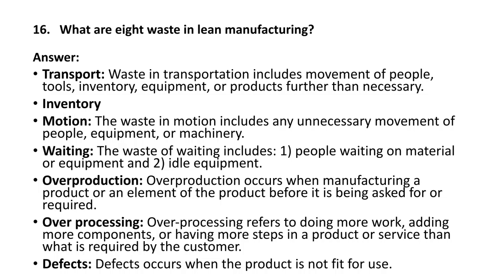The fifth waste is overproduction. Overproduction occurs when manufacturing a product or element before it is required. In push manufacturing, you are not considering demand and manufacturing products or elements regardless — that is also a kind of waste. The sixth waste is over-processing. Over-processing refers to doing more work, adding more components, or having more steps in a product or service than what is required by the customer. Over-processing means there are activities that are not adding value to the component.